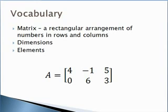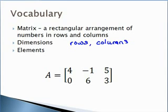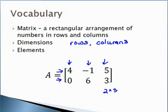A couple of things you need to know is how you define the dimensions of a matrix. You always count the number of rows and the number of columns, and it always goes rows first, then columns. So on this particular matrix A, it has two rows and three columns, so the dimensions are two by three.